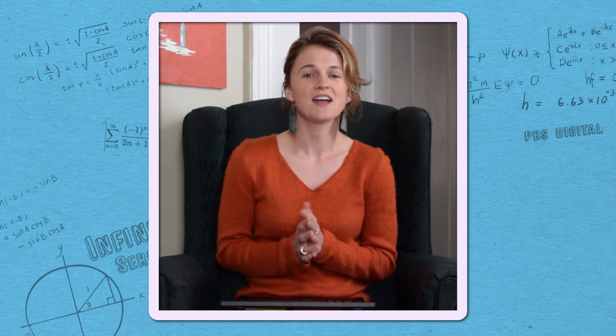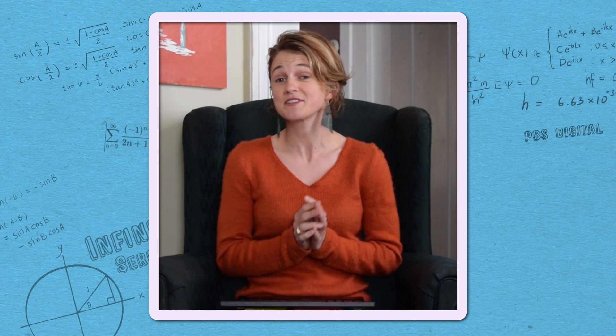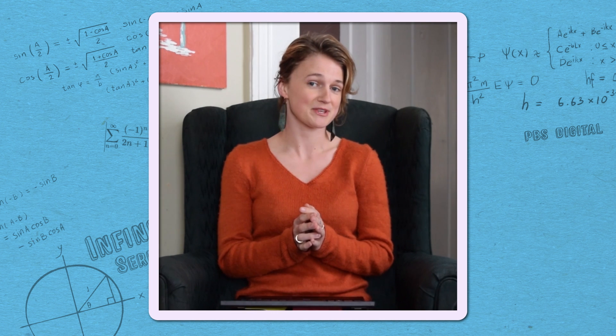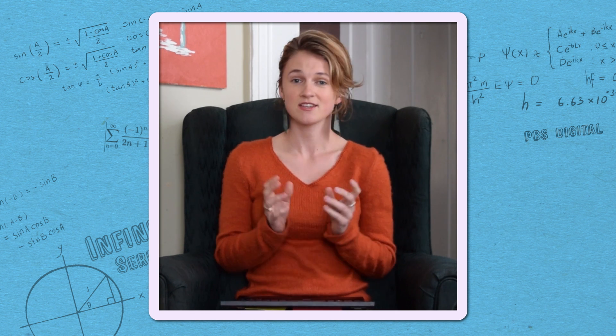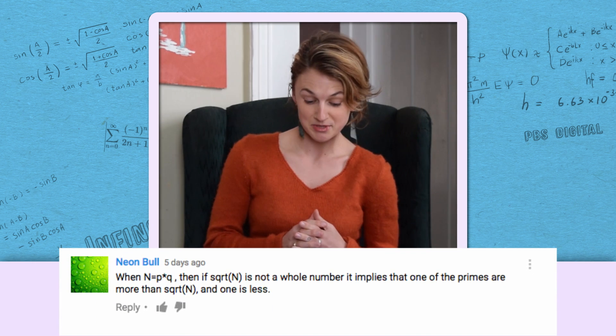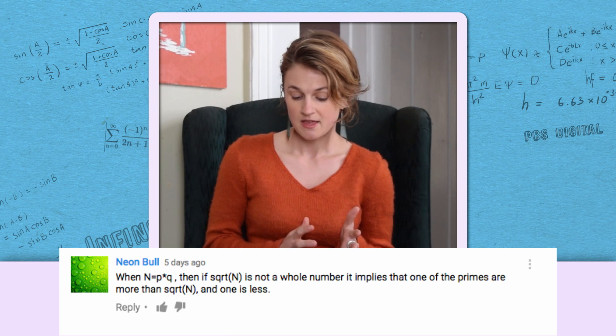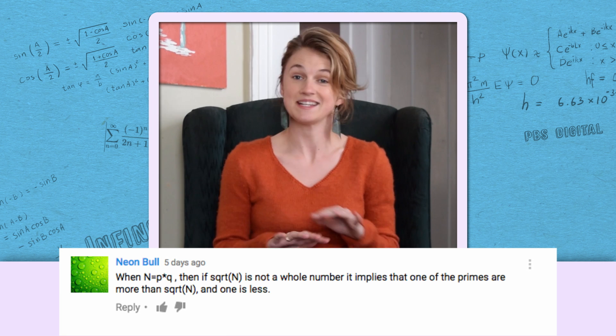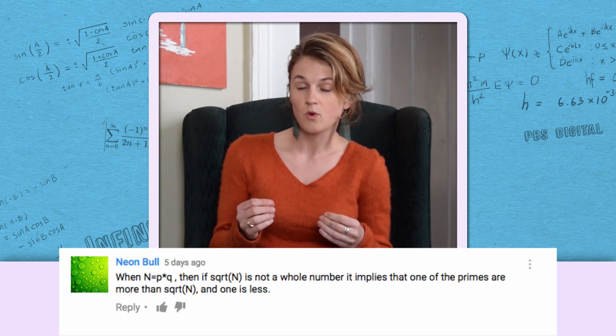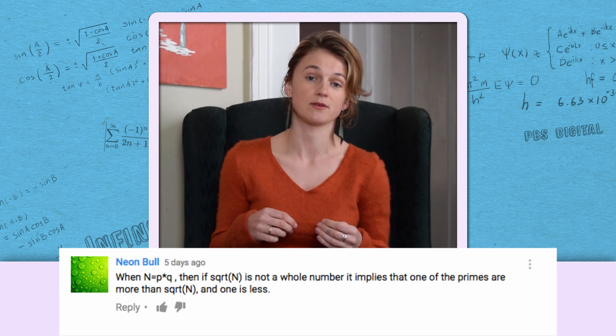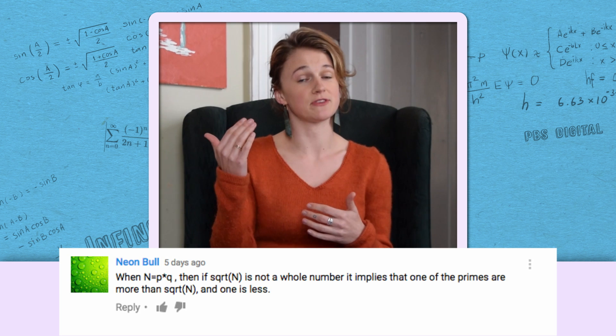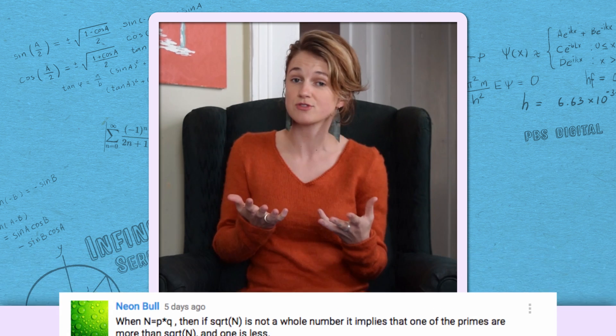Hello. I just wanted to respond to some of the comments about our first episode on Shor's algorithm. So, Neon Bowl says, when n equals p times q, then if the square root of n is not a whole number, it implies that one of the primes is less than the square root of n and one is bigger than the square root of n. That's true. So what that means is that if you're checking to find all of the prime factors of a number n, you only need to look below the square root of n. But it doesn't make that big a difference because if n is really, really big, then the square root of n is really big. So it's still a lot of numbers to check.